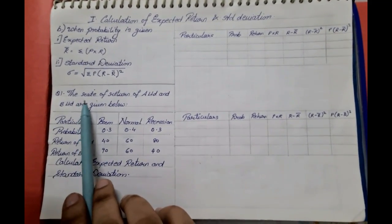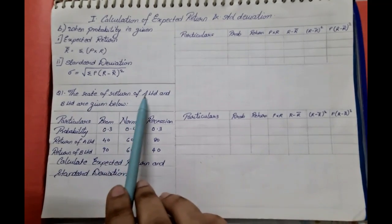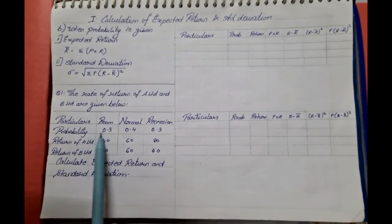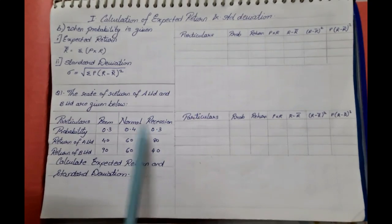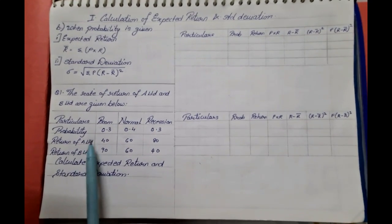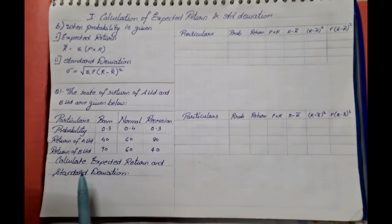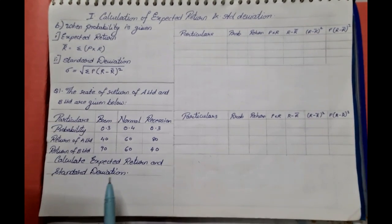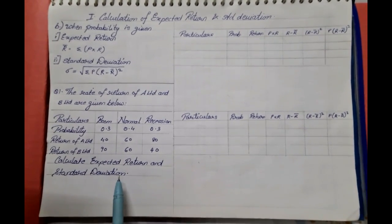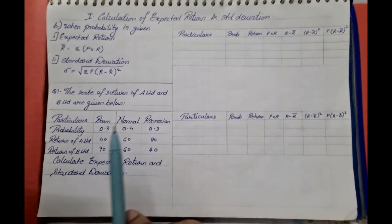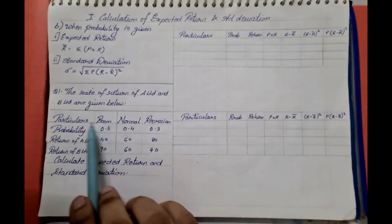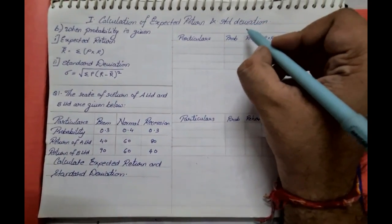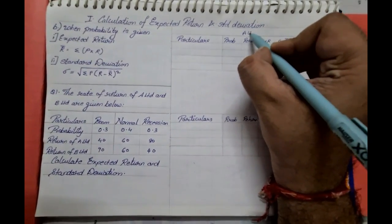The question given here is: the rate of return of A Limited and B Limited are given below. There is probability given, three conditions are given, and two companies are given. We need to find the expected return and the standard deviation. So let us now solve this particular sum, starting with A Limited.